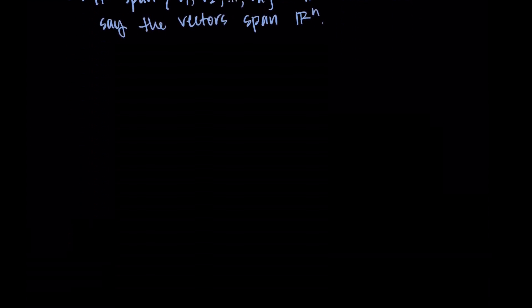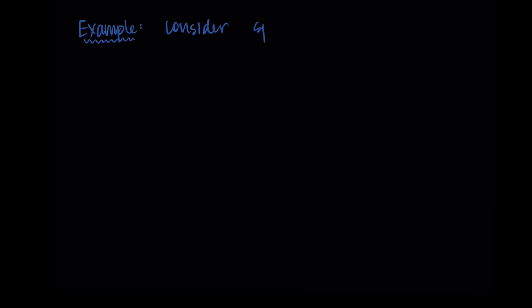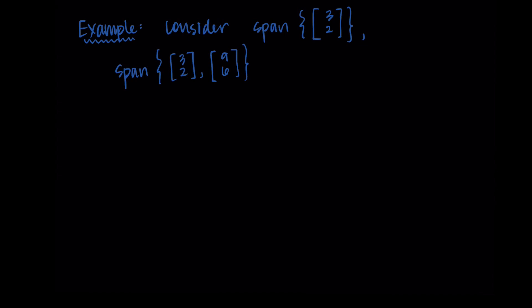To consider this more geometrically and give a sense for what span does, we're going to consider three different sets. We'll look at the span of a single vector [3,2], then the span of two vectors [3,2] and [9,6], and also the span of [3,2] with the vector [1,0].